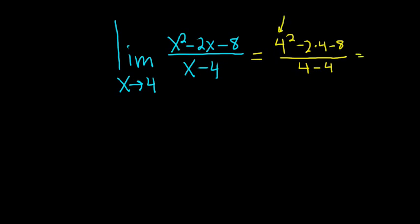So this piece here, 4 squared, is 16. And this is negative 8 minus 8, so that's also minus 16, over 0. So we get 0 over 0.